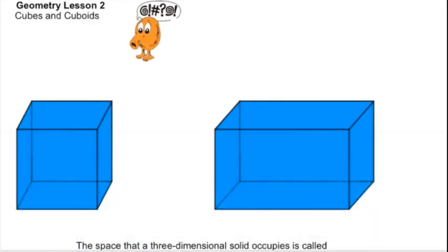Here we go with our second lesson on cubes and cuboids. What you'll notice here is a cube, and over here is a cuboid. You'll notice that the nets will look kind of similar when we talk about them, but there are also some differences.